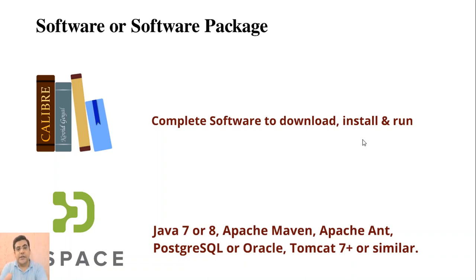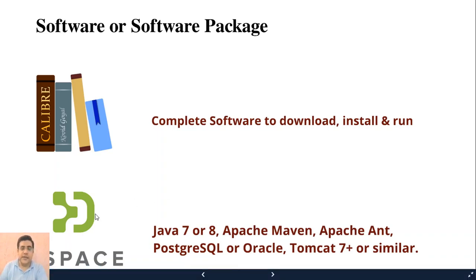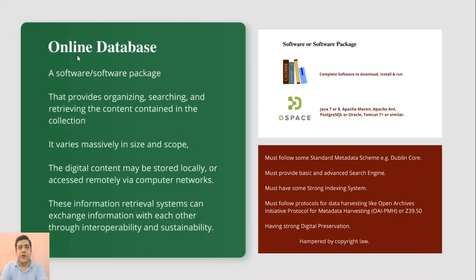Whereas to install DSpace, we need to work on prerequisites first. We need to install Java, Apache Maven, Apache Ant, PostgreSQL or Oracle, and Tomcat or similar. So DSpace is actually a software package, while Caliber eBooks Management is a software. That is what the distinction means.